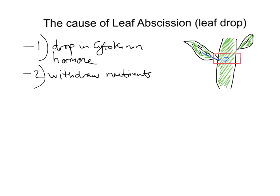As the cytokinin levels drop, we find that the level of auxins also decreases. Auxin is a type of plant hormone, so auxin level falls. We've had a drop in cytokinin, which triggers the plant to withdraw nutrients from the leaf. As a knock-on effect, auxin levels fall too. In response to the drop in auxin, another hormone that is antagonistic to auxin — called ethene — increases in concentration, as ethene production is stimulated.